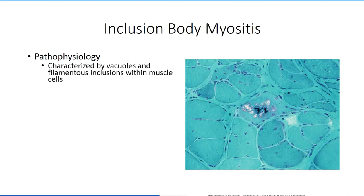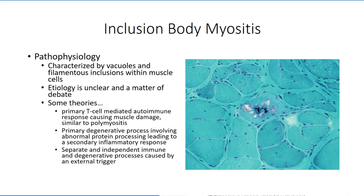The disorder is characterized by the presence of vacuoles and filamentous inclusions within the muscle cells. A few theories have been proposed to explain the pathophysiology. One involves an autoimmune cytotoxic T-cell mediated attack similar to that seen in polymyositis. A second theory is that the disease involves a primary degenerative process related to abnormal protein processing, where the degenerative changes trigger the inflammatory response. A third theory is that the inflammation response is the result of an as-of-yet unidentified trigger.